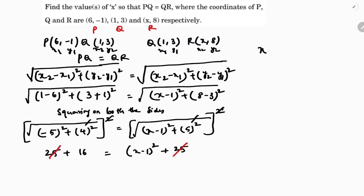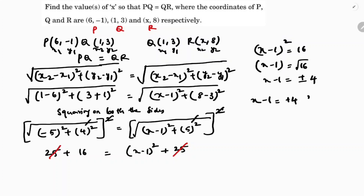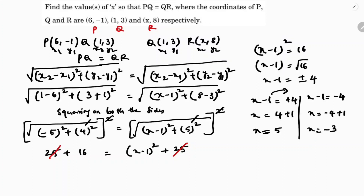So (x minus 1) whole square equals 16, which gives x minus 1 equals plus or minus 4. If x minus 1 equals plus 4, then x equals 5. If x minus 1 equals minus 4, then x equals minus 3. So both x equals 5 and x equals minus 3 are valid values for x.